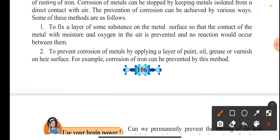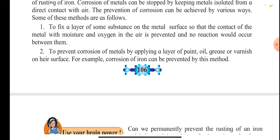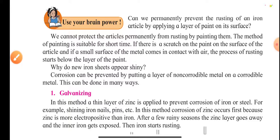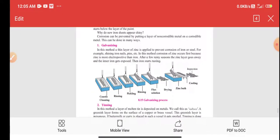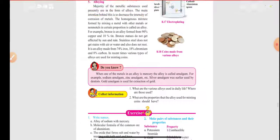We can use paint, oil, grease, or varnish on the surface of a metal to prevent corrosion — these are temporary methods. There are also permanent methods that help permanently avoid rusting, which will be covered in the next period inshallah, in a short video to be posted tomorrow or on Saturday.